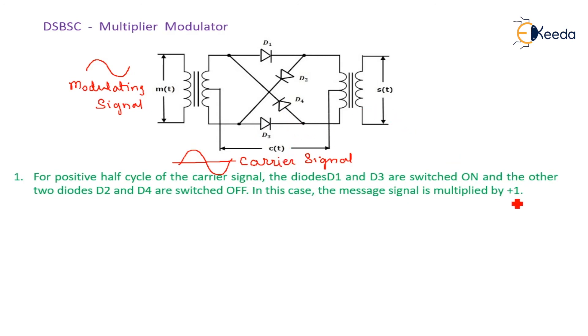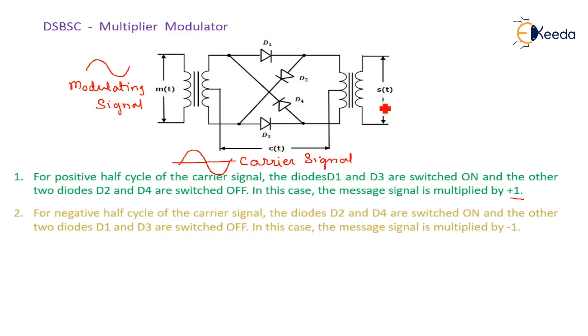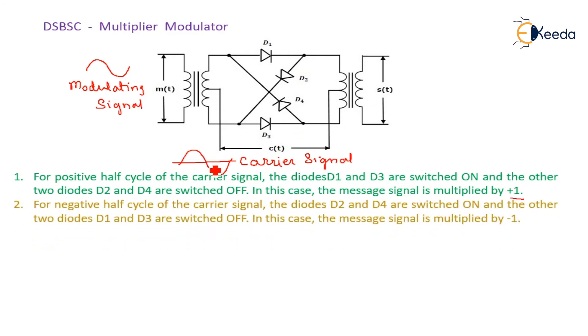During positive half cycle, message signal will get multiplied by plus one. During the negative half cycle of carrier signal, diode D2 and D4 conduct, and D1 and D3 remain switched off. So in this case, the message signal is multiplied by minus one.